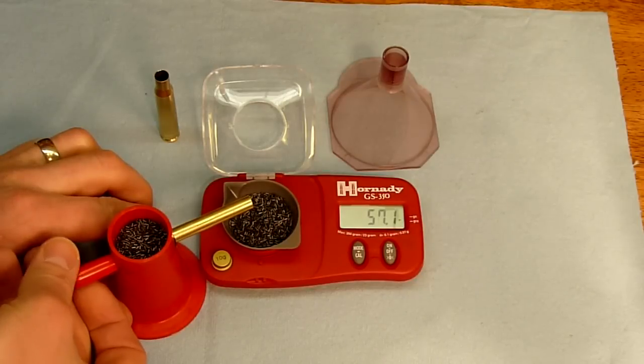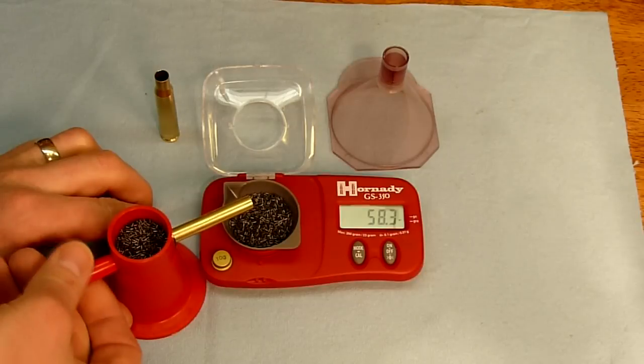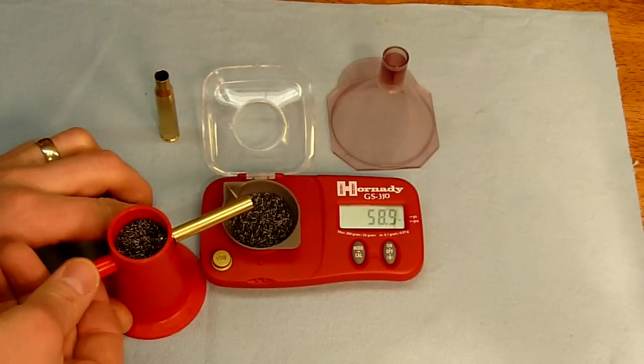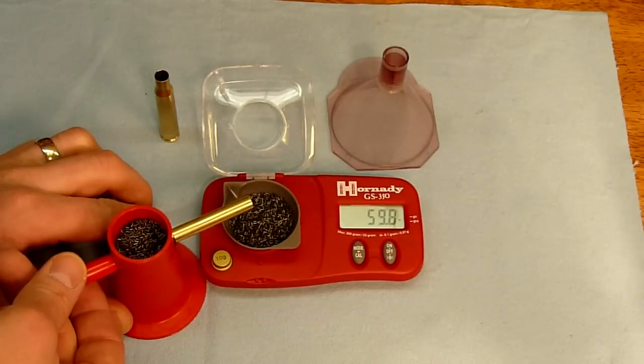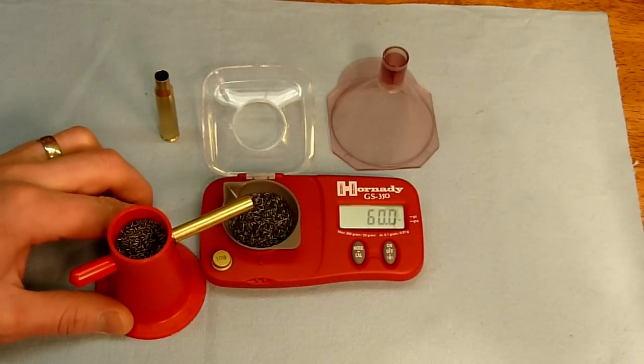So the powder is starting to flow. We're at 57. We're going to keep going. 58. 59. Okay, now we're going to go a little bit slower. 59.8. There we go. We're at 60 exactly.